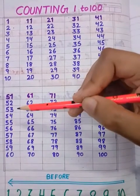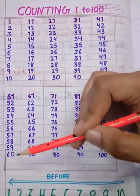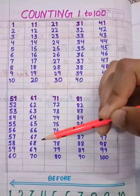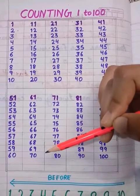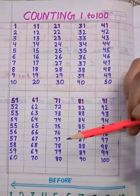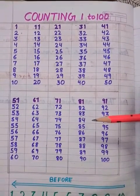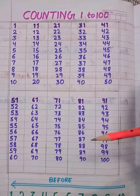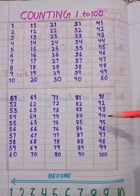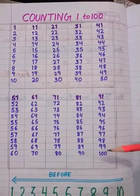51, 52, 53, 54, 55, 56, 57, 58, 59, 60. 61, 62, 63, 64, 65, 66, 67, 68, 69, 70. 71, 72, 73, 74, 75, 76, 77, 78, 79, 80. 81, 82, 83, 84, 85, 86, 87, 88, 89, 90. 91, 92, 93, 94, 95, 96, 97, 98, 99, 100.